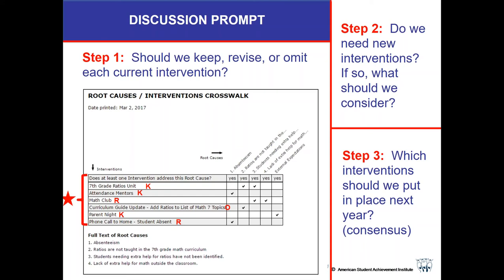You may be thinking: our attendance has gone up, but with these two interventions it's not gone up enough — now that we've got these two going, let's add on another one. Or especially if one isn't working and we're taking it out, what are we going to do now? Another reason you might need new interventions is if you have a brand new root cause that you've not worked on before — then you really do need interventions to address that. So you'll brainstorm: do we need new interventions, and if so, what should we consider?